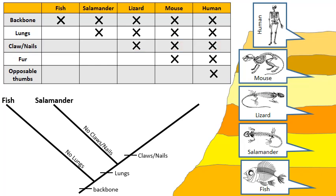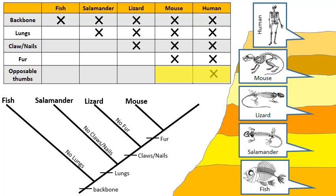Now I have the lizard, the mouse, and the human. How is one different from the other two? I can see that the lizard doesn't have fur, but the mouse and the human do. So the lizard is going to be my next branch, and above that are animals with fur. Now for the mouse and the human: mice do not have opposable thumbs, but humans do. So that branches off the mouse, and on the right side this branch — opposable thumbs — leads to humans.